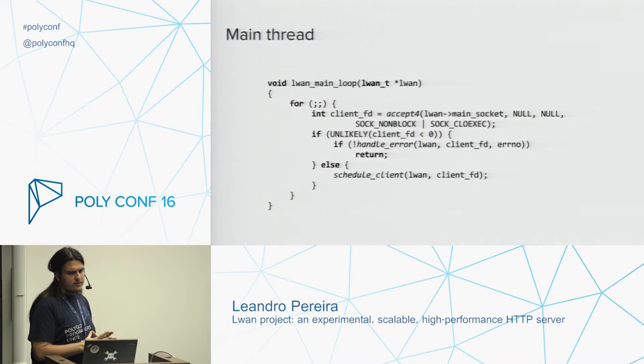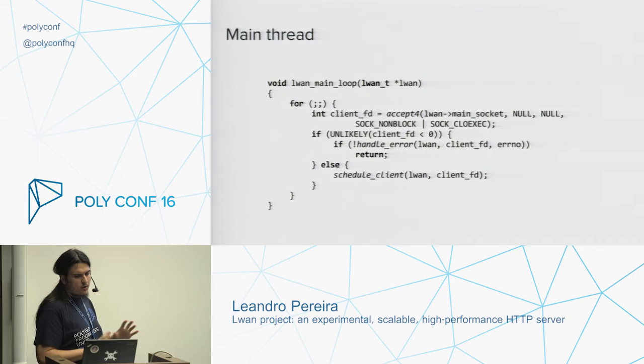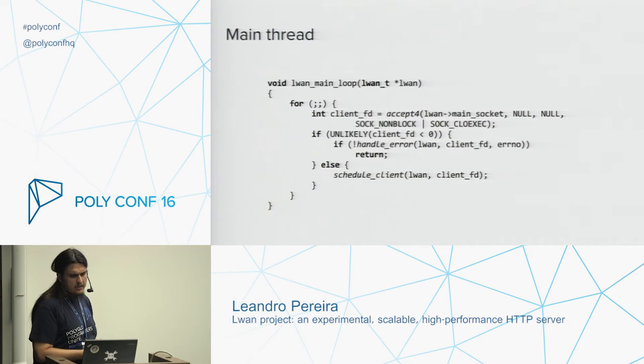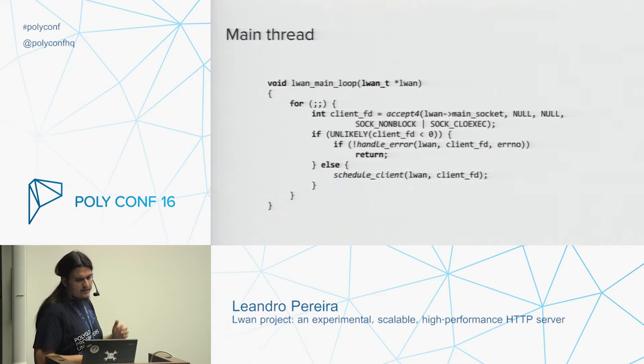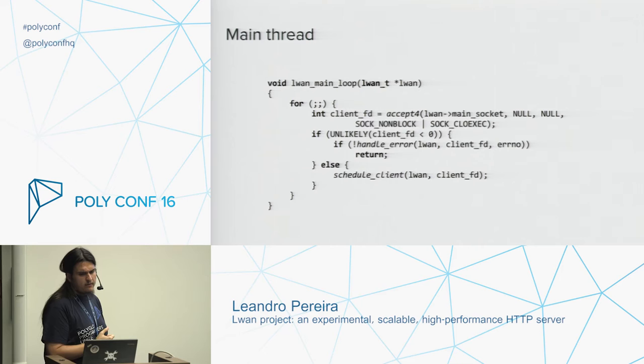There are two notable differences. First, accept4 is used to set flags on the client's socket — notably non-blocking I/O and close-on-exec — without any need for an additional round trip to the kernel. It also calls a private function that schedules the client to one of the worker threads. If SIGINT is received — in other words, if Ctrl+C is pressed — the signal handler will shut down the main socket, and accept4 will fail with a bad file descriptor error. That's how L1 knows to shut itself down, and it's a lot easier than the self-pipe trick usually used in these situations.